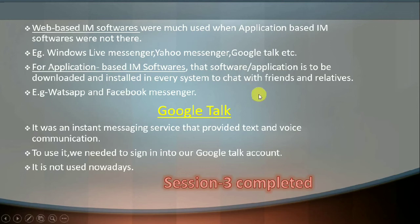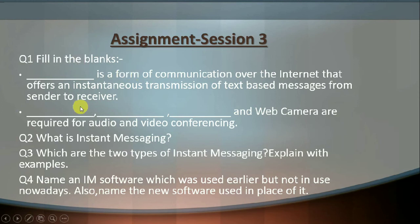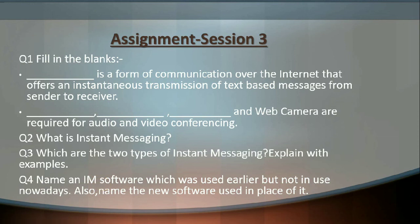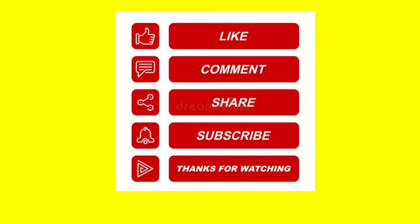I hope you have understood all the topics. Here are some assignment questions: Question 1 — Fill in the blank: Dash is a form of communication over the internet that offers instantaneous transmission of text messages from sender to receiver. Also, Dash, Dash, and Dash along with a web camera are required for video and audio conferencing. Question 2: What is instant messaging? Question 3: Name the two types of instant messaging software with examples. Question 4: Name an IM software used earlier but not used nowadays, and name the new software used in its place. Do the assignment in your notebook.